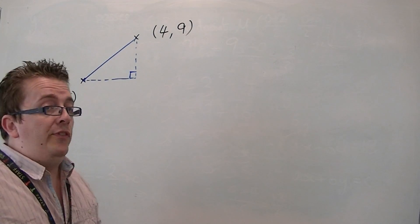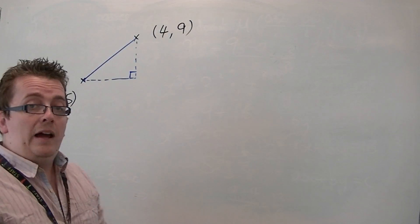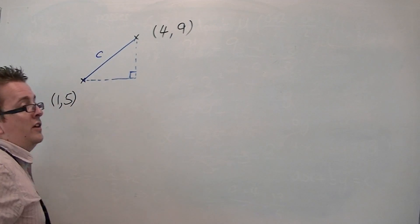Now, Pythagoras' theorem, a squared plus b squared equals c squared, will allow us to determine the missing length. Let's call it c for convenience sake.